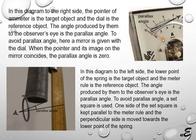Measurement should be taken at zero parallax angle, meaning this angle should be zero. The eye position should be such that the eye, the target object, and the reference point are all in the same line, or the line of sight should be perpendicular to the scale. For the ammeter, zero parallax angle means the pointer, the dial, and the eye form a line perpendicular to the dial.